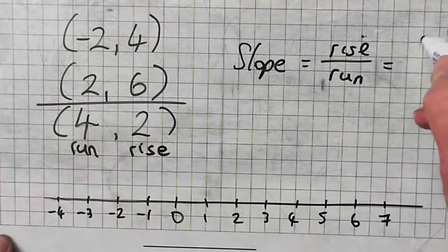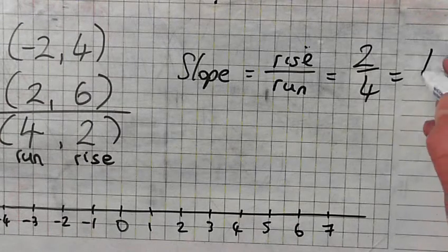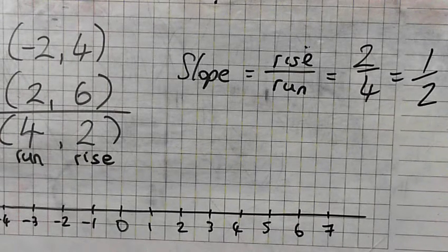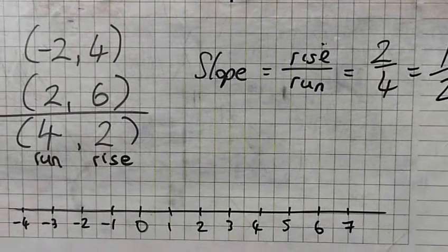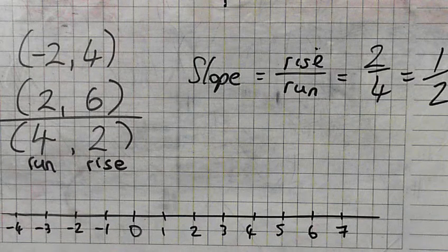Yeah. 2 over 4 is the same as? One half. Slope of a half. Does everybody understand? Yeah. Yes, sir.